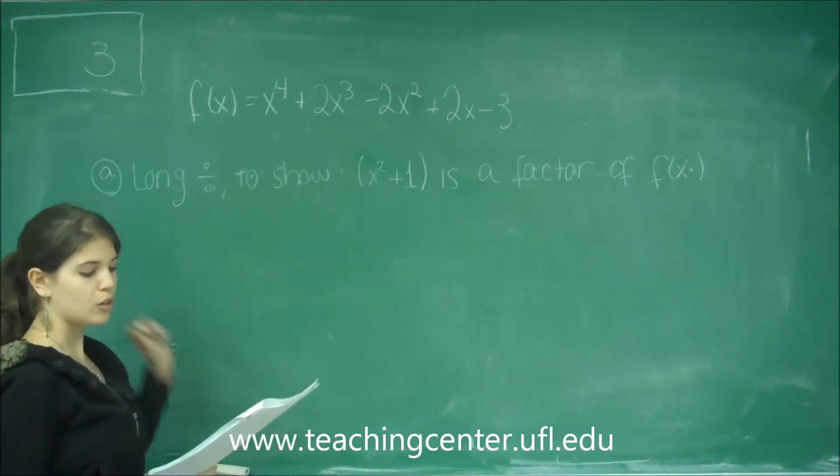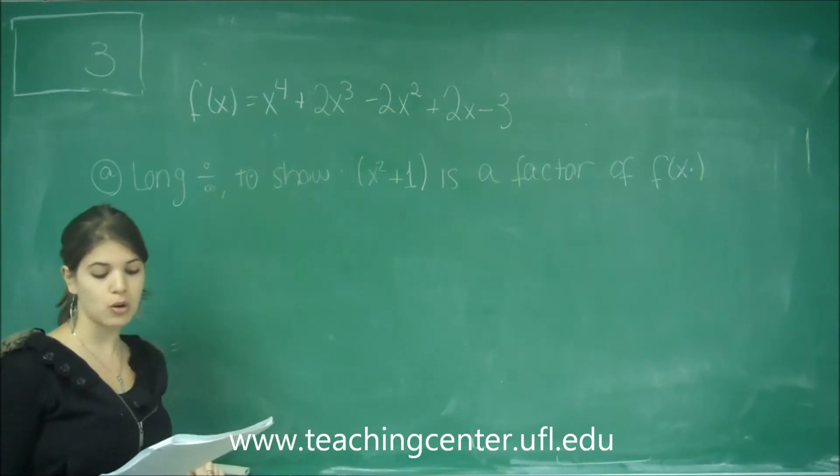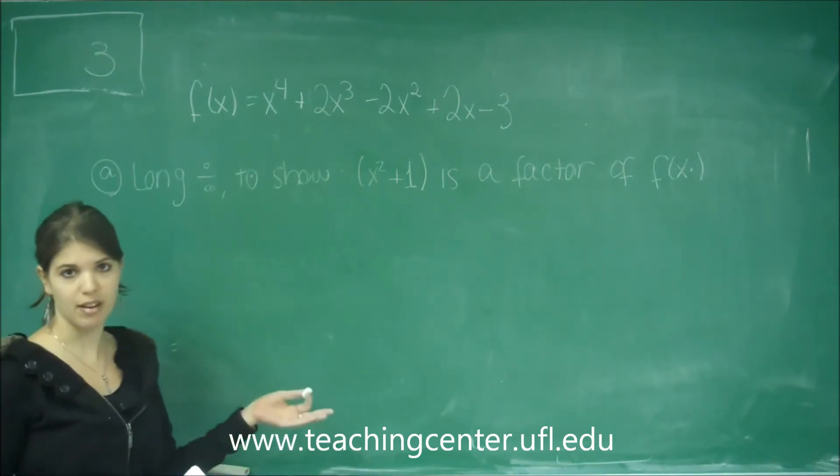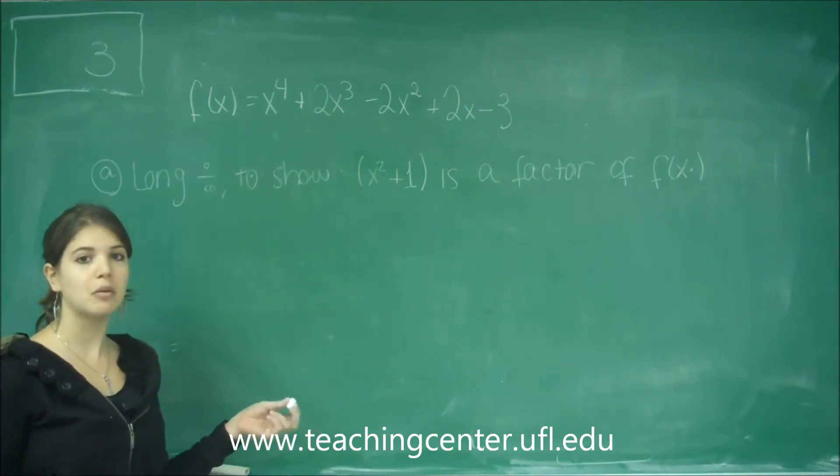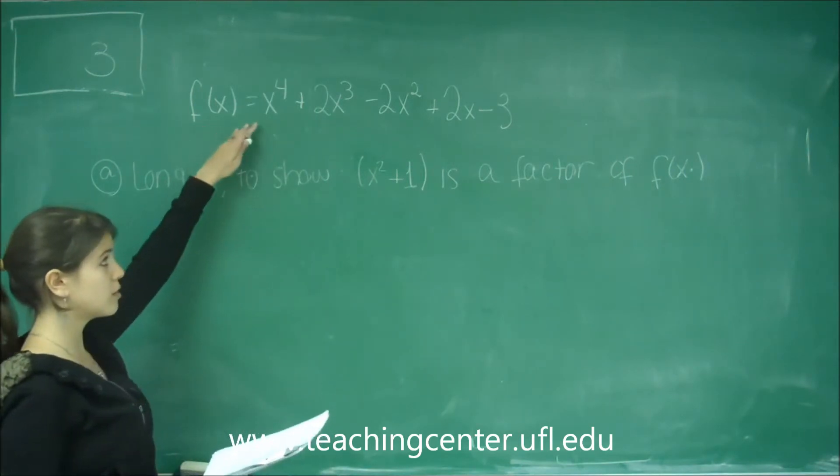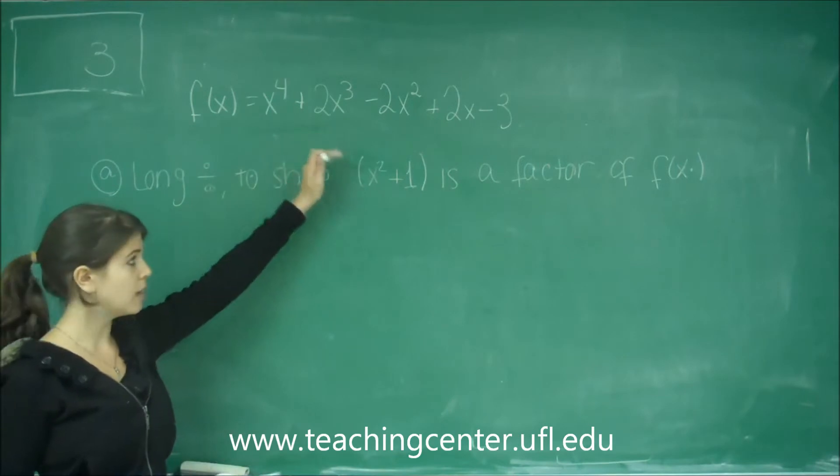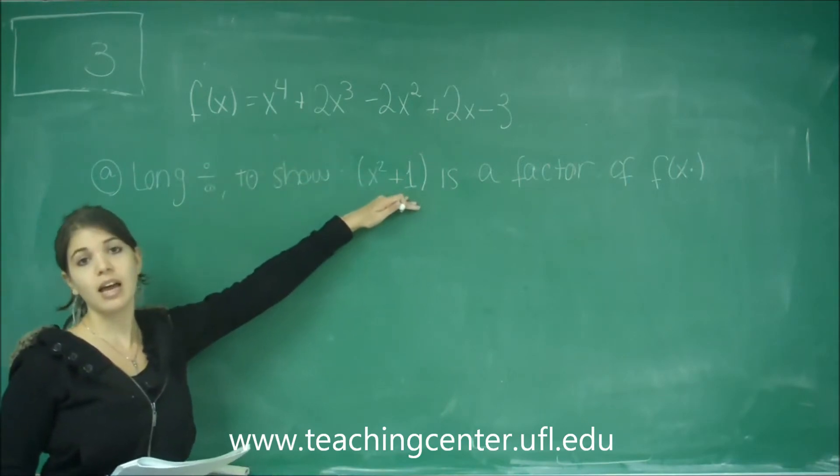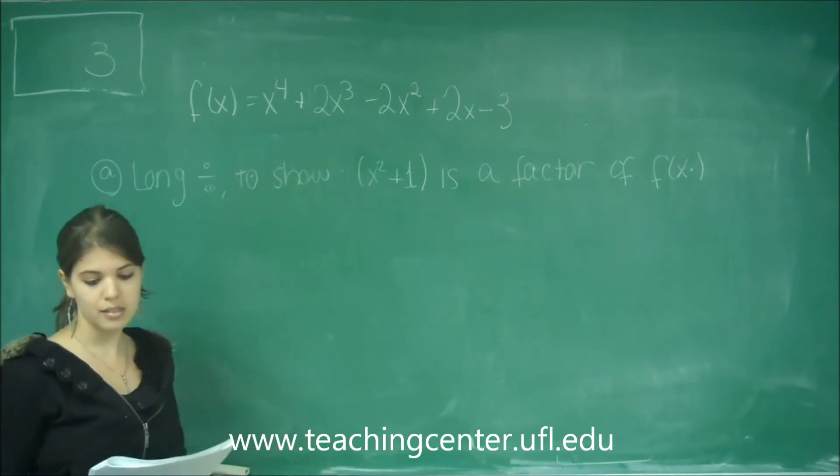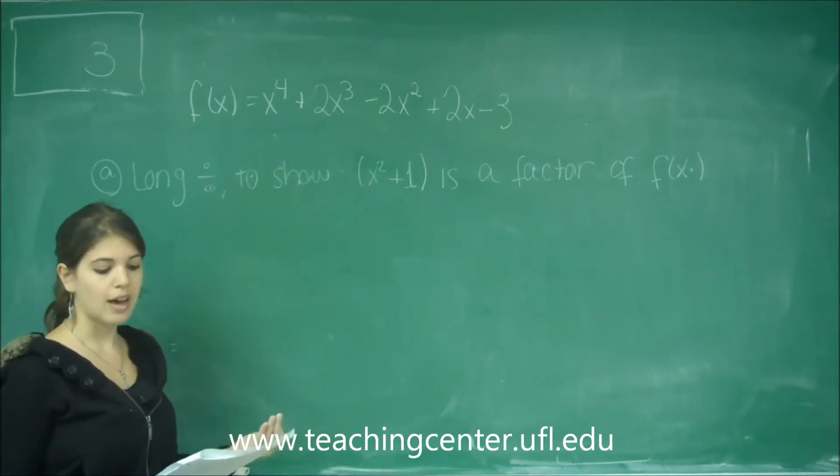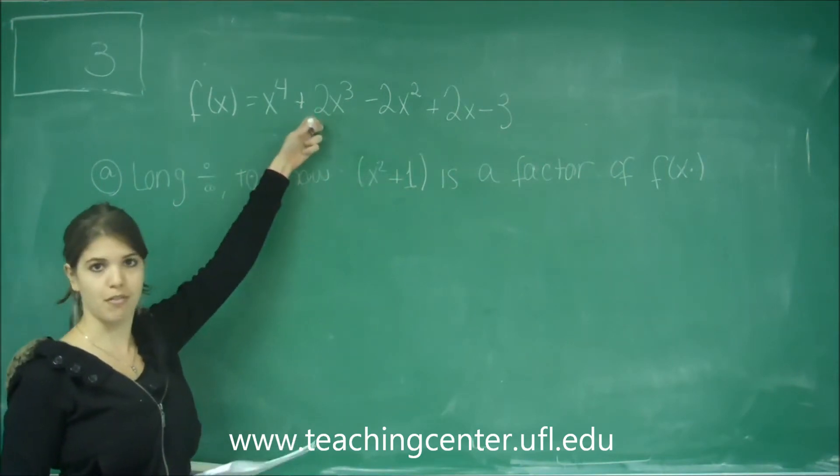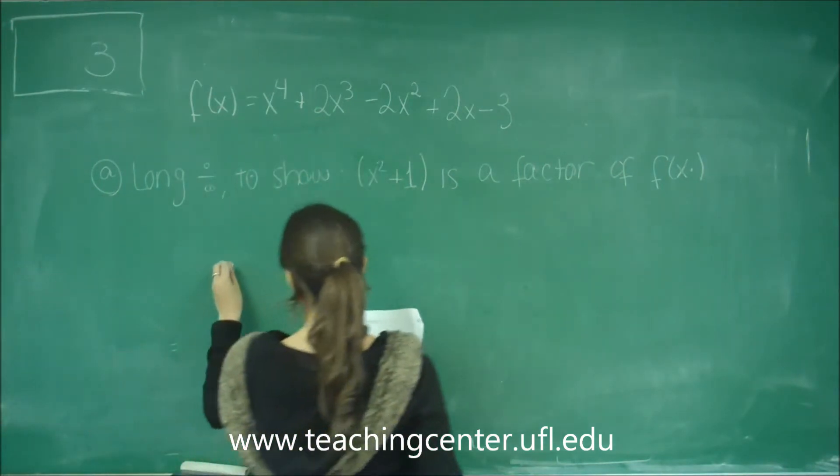Part A says use long division to show that x squared plus 1 is a factor of f of x. So basically what they're saying is, let's use long division to divide this f of x by this factor, and if the remainder is 0, then that is proving that this factor is in fact a factor of f of x. So let's go ahead and do that.